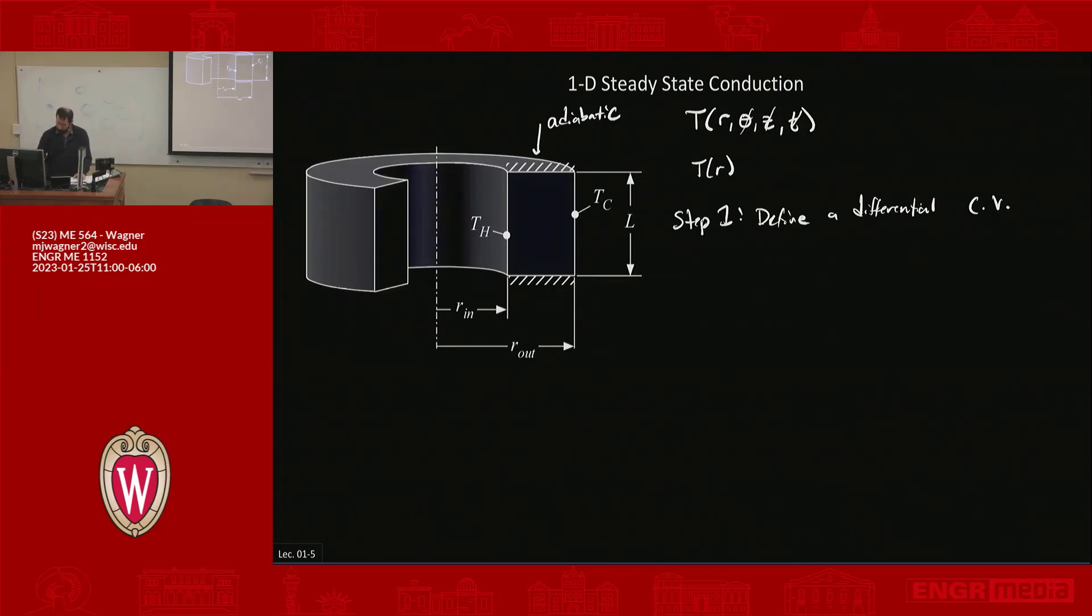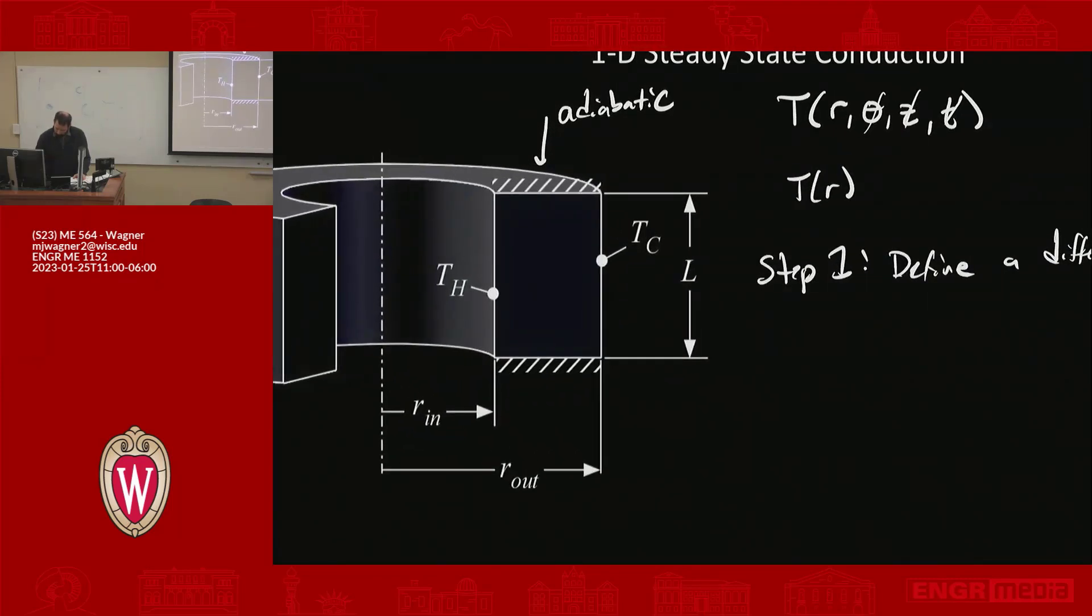So if we look at this example over here, zoom in, we would draw a control volume. So first, the question is, what is my control volume, right? Would I draw it like this? Would I draw it like this? Or would I draw it like this? Let's say one, two, or three. One, two, or three.